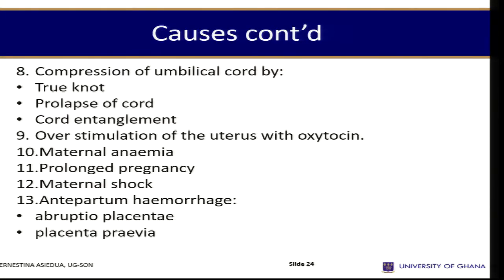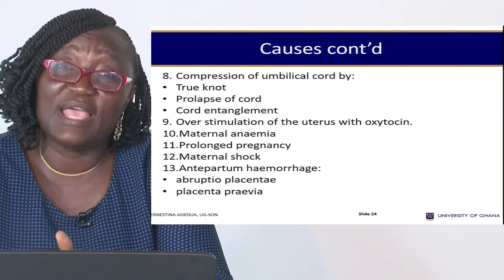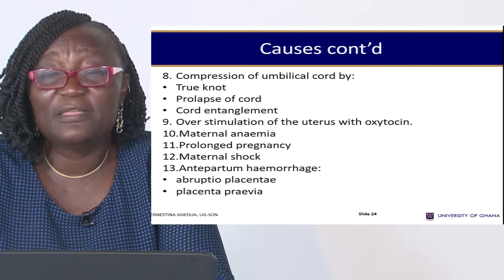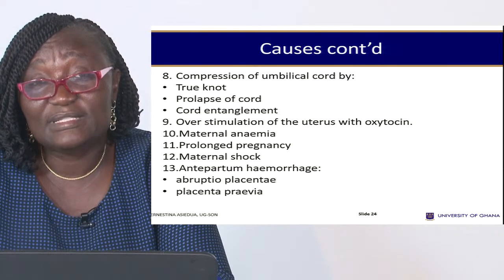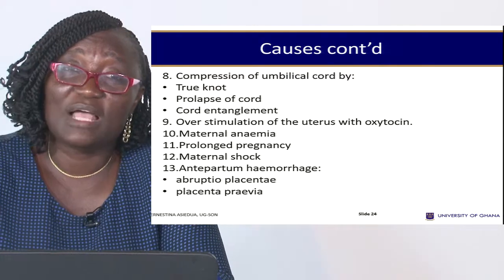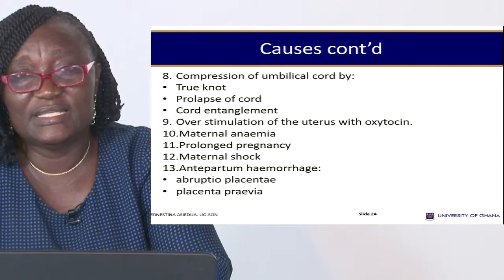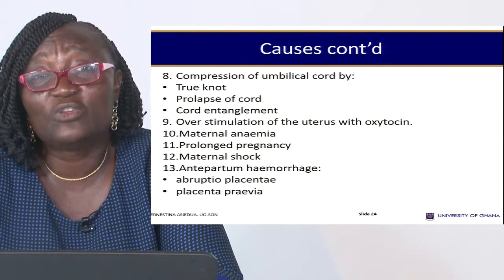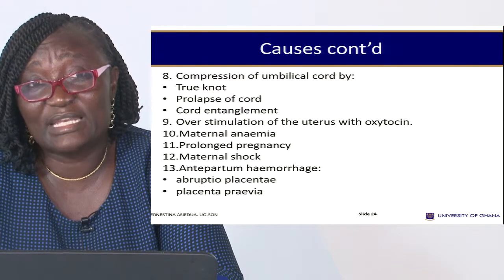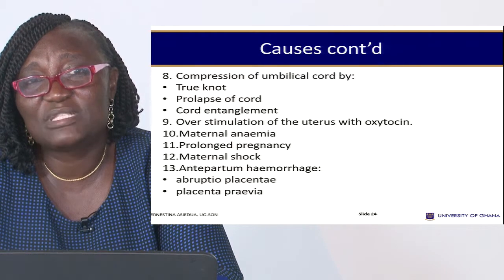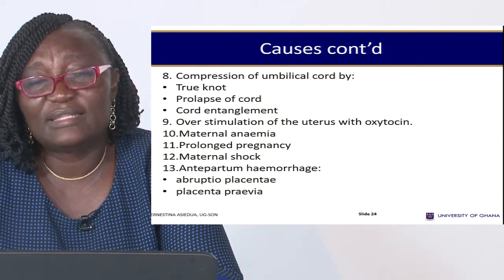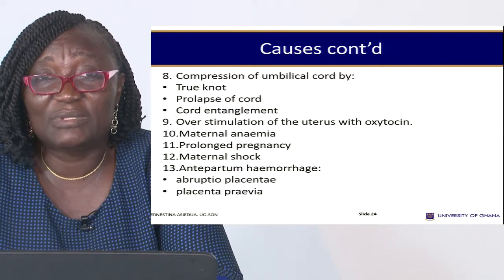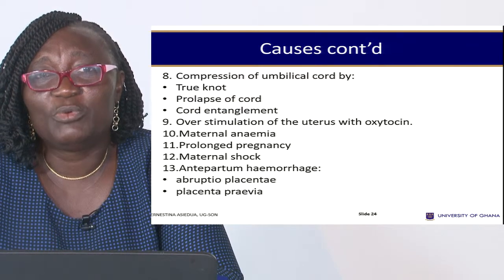Compression of the umbilical cord is another cause. As the baby is coming, the cord is still attached to the placental site bringing oxygen to the baby. If there is anything pressing on the cord, it blocks oxygen supply to the fetus and fetal distress sets in — especially a true knot where the cord becomes so tight that oxygen cannot pass through. We could also have a prolapsed cord, where the cord comes in front of the presenting part, and cord entanglement around the body or neck.